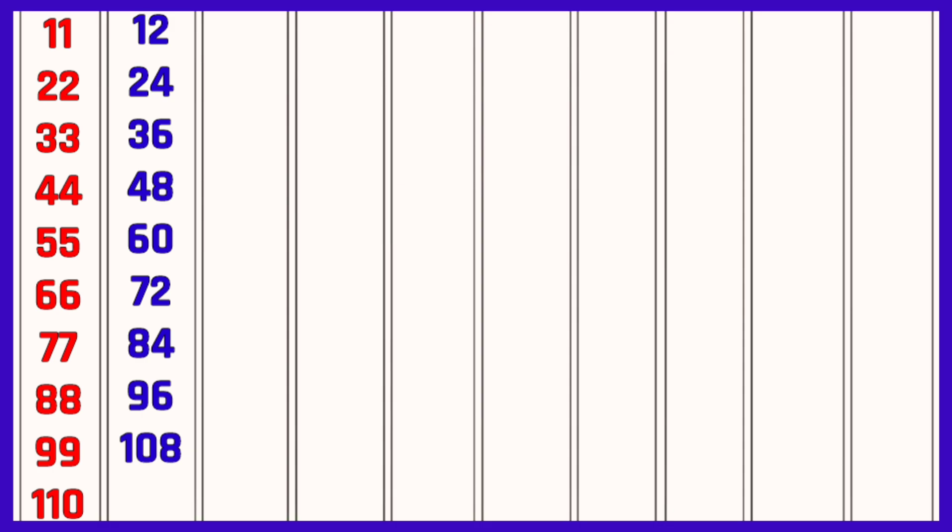Table of 12: 12 ones are 12, 12 twos are 24, 12 threes are 36, 12 fours are 48, 12 fives are 60, 12 sixes are 72, 12 sevens are 84, 12 eights are 96, 12 nines are 108, 12 tens are 120.